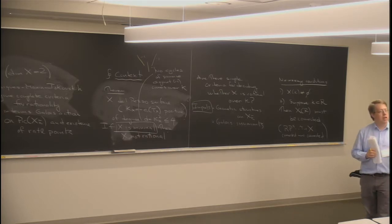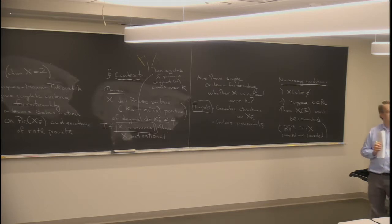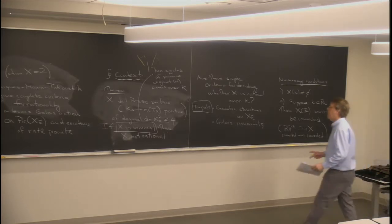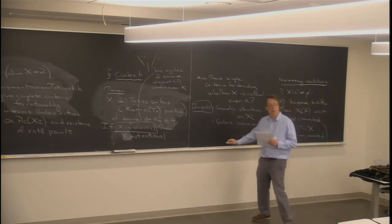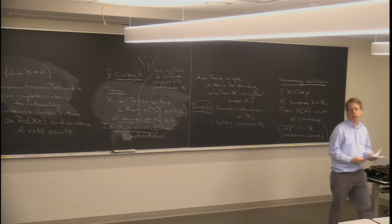So this is the prototype: we reduce this rationality question to something that we can analyze via Galois theory. This is kind of the big picture. Are there any questions before I go into specific examples?